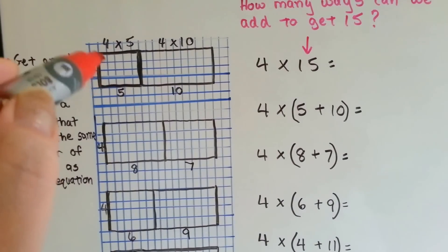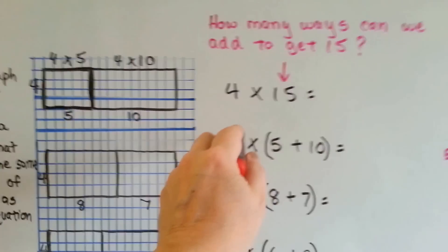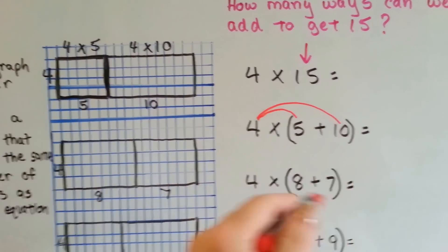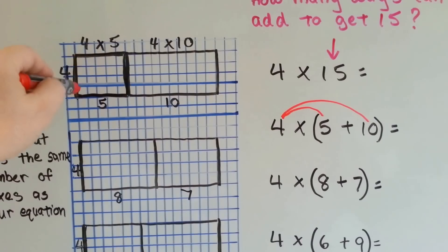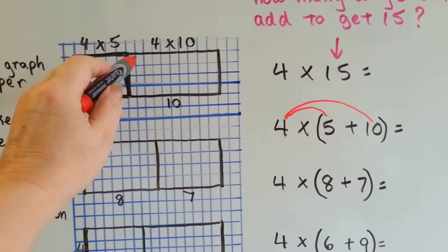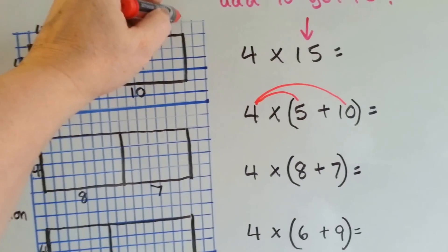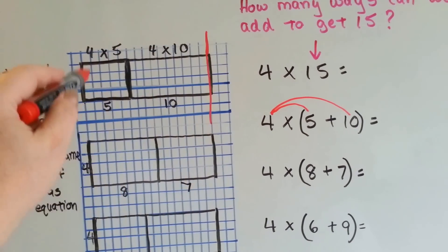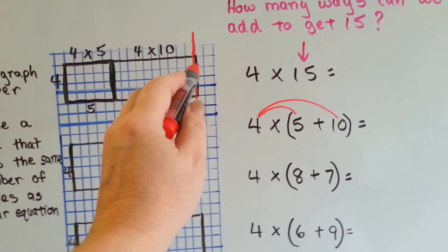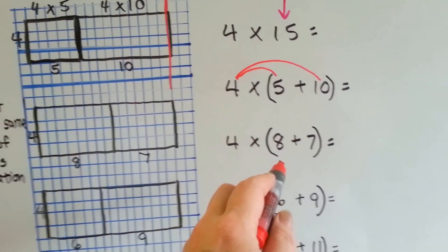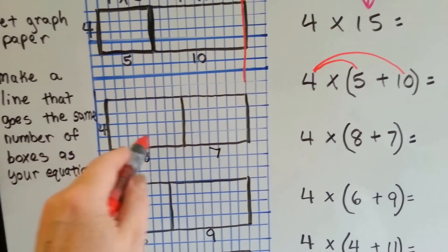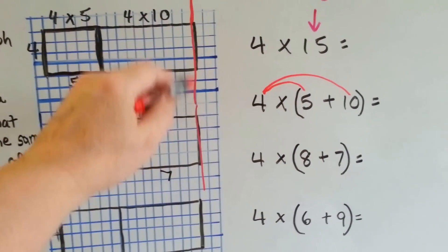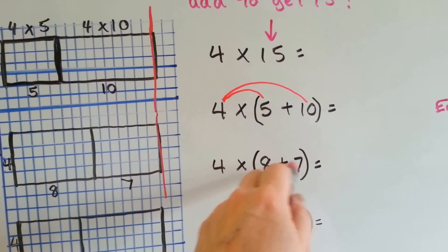There are 4 boxes going down, and then for this one, we did the 4 times 5, and then we do 4 times 10. See how it got distributed over? Here's the 4 coming down and 5 going across, then here's the 4 coming down and 10 going across, and it stops right here — that's how many boxes are 4 down and 5 plus 10 across for 15. Now if we did 4 times 8 plus 7, we'd have 4 coming down, 8 boxes going across, and then 7 boxes going across. It ends the same place because both of these equal 15.